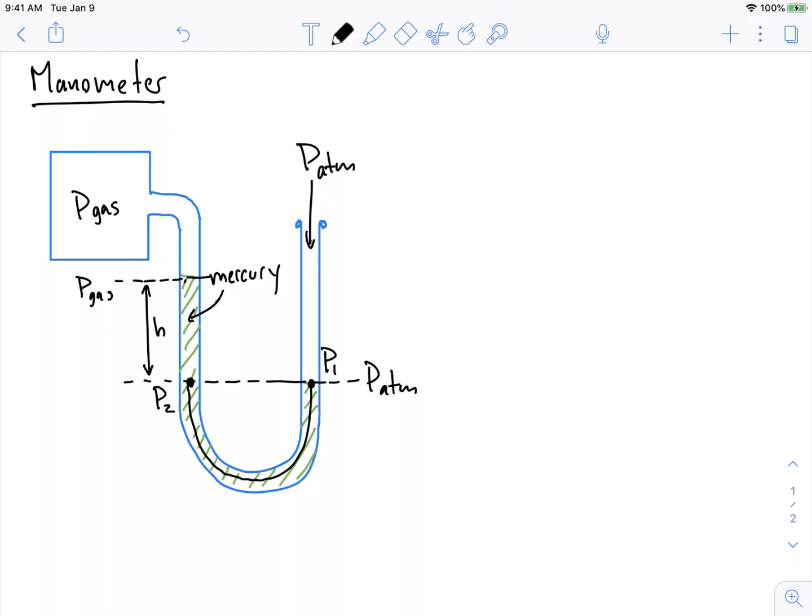Because they're connected, what hydrostatic pressure says, or hydrostatic equilibrium says, is that the pressure at that one point is equal to the pressure at this other point.